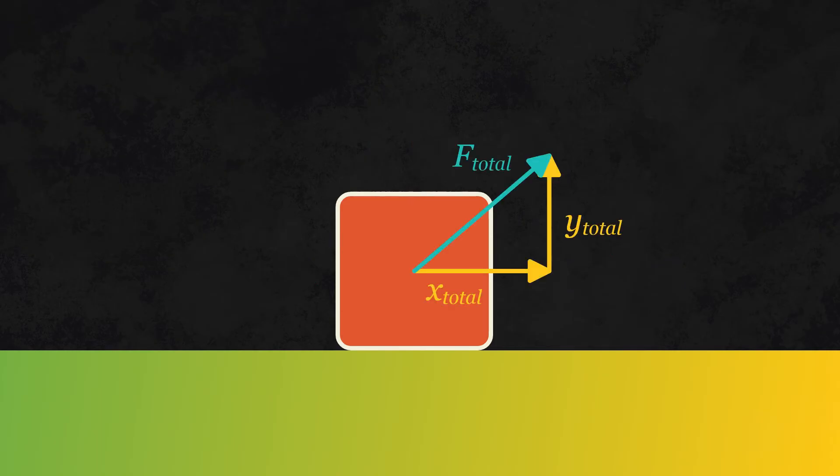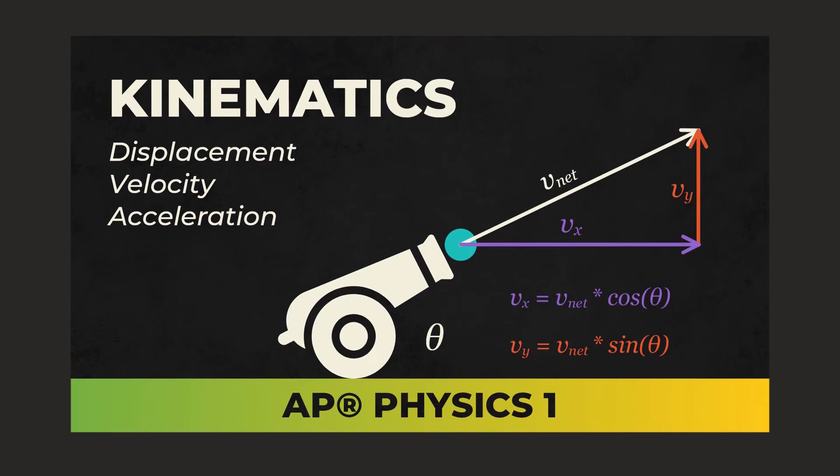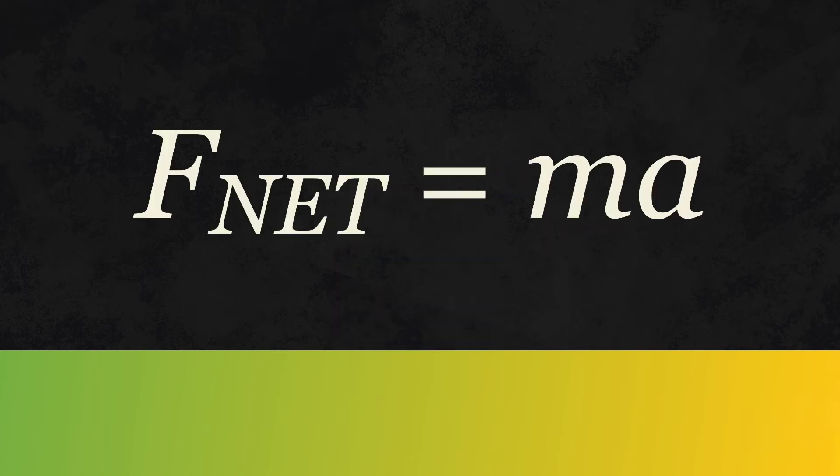Again, if you don't know how to add multiple vectors in multiple directions, watch my previous video. Anyway, the net force, which is the sum of all the forces, is what's going to cause the object to accelerate. This is the force you should use to calculate acceleration using f equals ma.